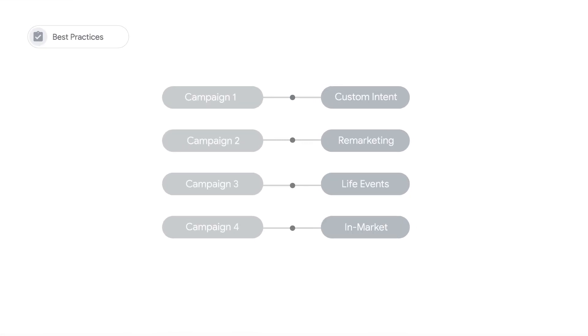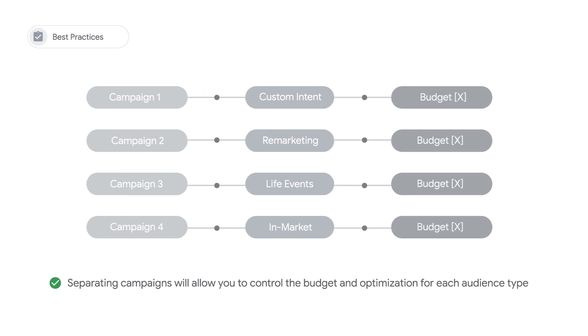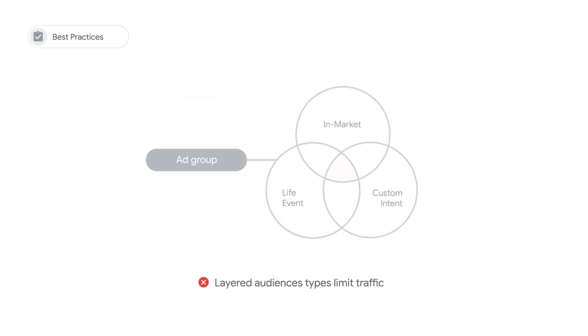All of these audience types are worth testing as part of your YouTube for Action strategy. But in this video, we will focus on implementing custom intent audiences, a newer audience type that performs well for many advertisers. It is best practice to use separate audience types in separate campaigns, which allows you to control the budget and optimization for each. Audience types should not be layered on top of one another since it can limit traffic.